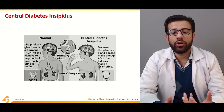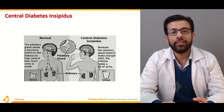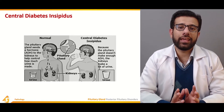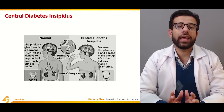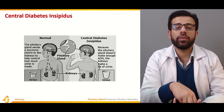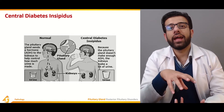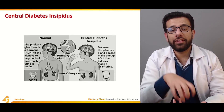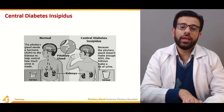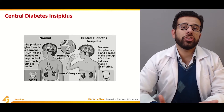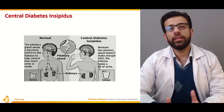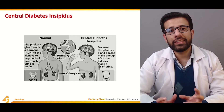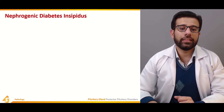Because the pituitary gland does not make enough ADH, the kidneys produce a large amount of urine. When signals are not received and there is a decreased release of ADH, it results in central diabetes insipidus, and the patient presents with excessive urination and thirst. These are the main symptoms of central diabetes insipidus.